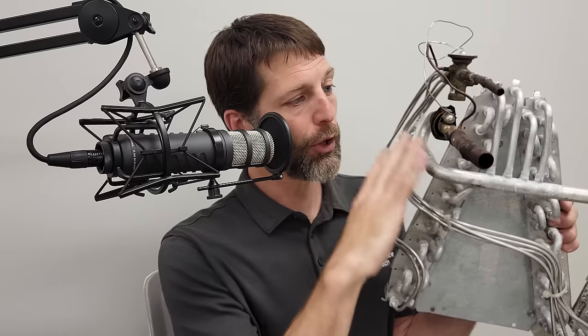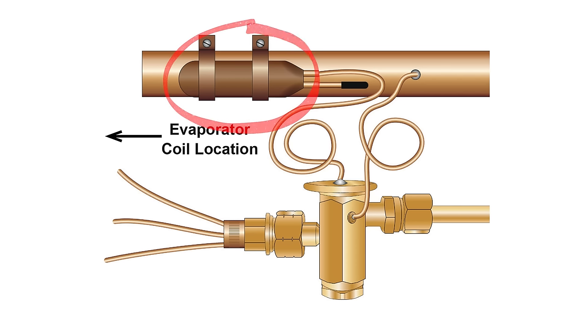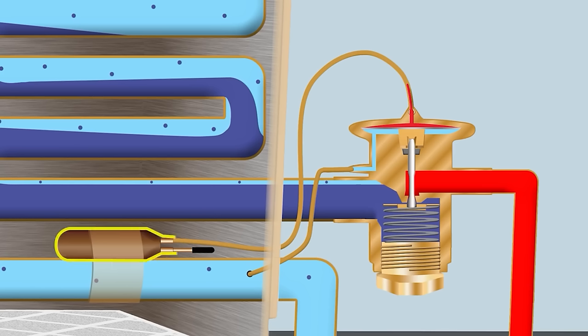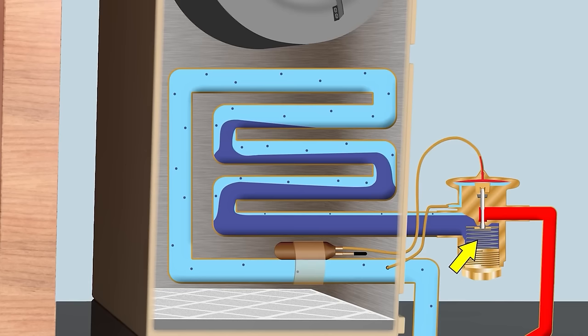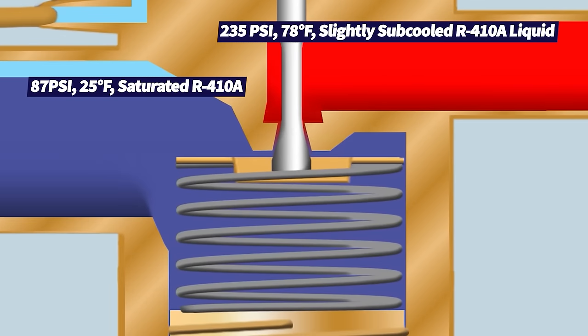Another refrigerant problem is at the thermostatic expansion valve. This type of metering device could have a clog in it, or it could be restricted because the little sensing bulb attached to the suction line has leaked out its refrigerant charge. This is called a liquid line restriction — even when you have the proper refrigerant entering, it's restricting the pathway too much, lowering the pressure too much.